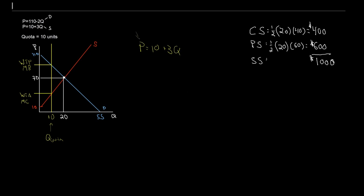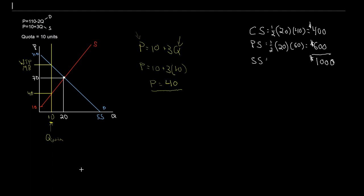I have two unknowns: the price, which is what I want to solve for, and the quantity — which in this case isn't unknown. That's going to be 10, the quantity under our quota. So price is 10 plus 3 times 10. That gives me price equals 10 plus 30, so a price of 40. We just calculated this price from our supply curve — going 10 up to the supply to get a price — so 40 is our willingness to accept.